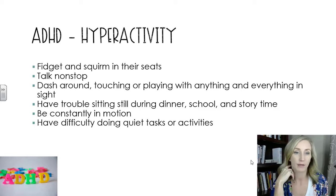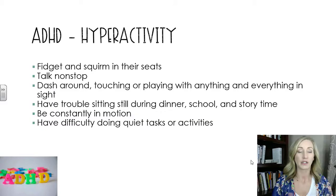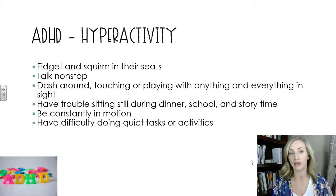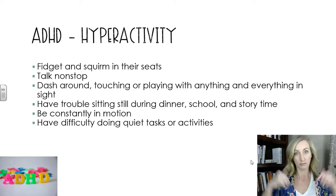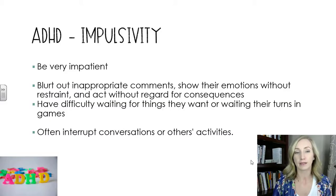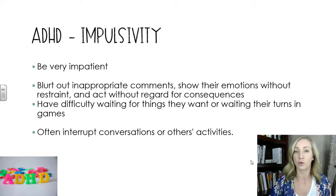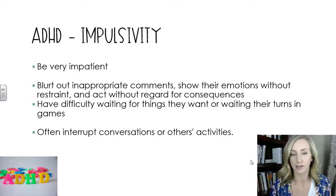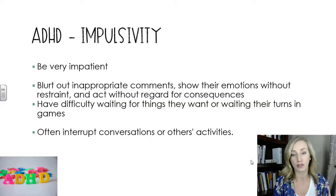Hyperactivity involves fidgeting and squirming in seats, talking a lot, dashing around, touching or playing with anything in sight, having trouble sitting still, and being constantly in motion — both physically and mentally. They also have difficulty doing quiet tasks. Impulsivity includes being impatient, blurting out inappropriate comments, showing emotions without restraint, and acting without regard for consequences. They have difficulty waiting for things they want or waiting their turn in a game, and often interrupt conversations or others' activities.